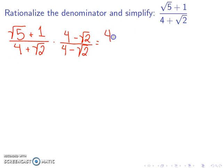So my first two terms is 4 times the square root of 5. The outside terms will be negative the square root of 10. My inside terms are plus 4. My last terms are minus the square root of 2.